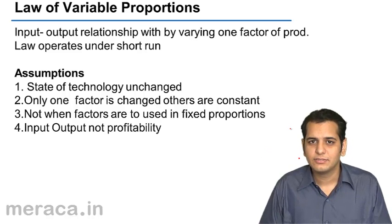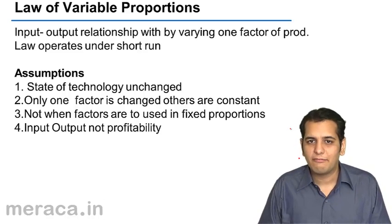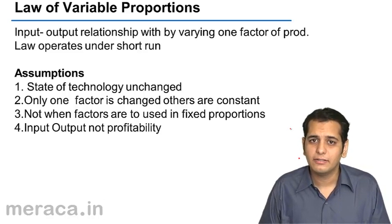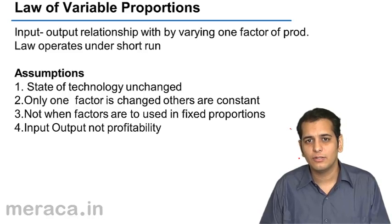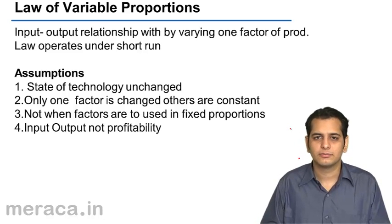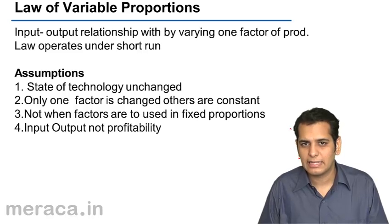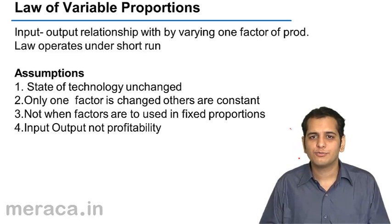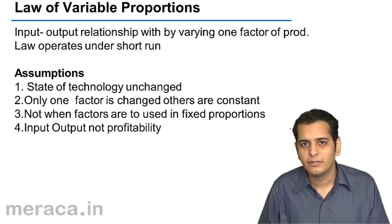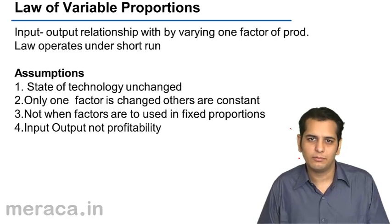In the last slides, we have learned what is the relation between average product and marginal product. We have also seen what is total product. Having learned what is total product, average product, and marginal product, let's move ahead with learning the law of variable proportions.